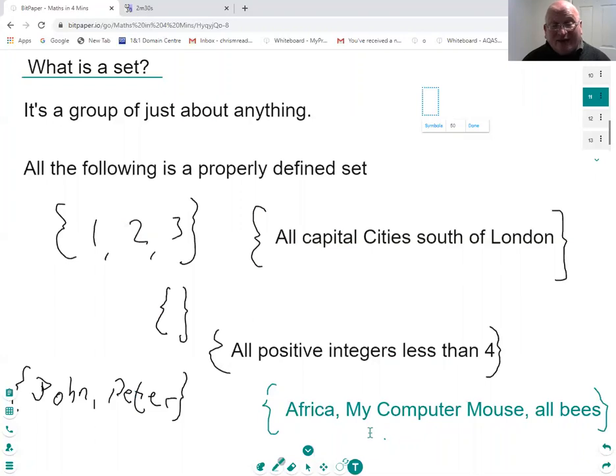And this last one's a bit random. Africa, my computer mouse, and everything in the world that's alive. Those things don't seem to have much in common with each other. But they can all live together in the same set, so long as you define it as such.